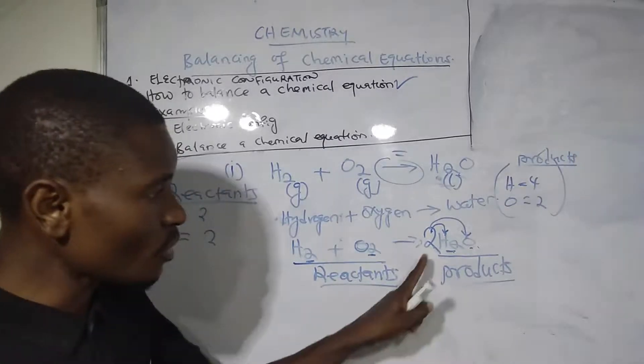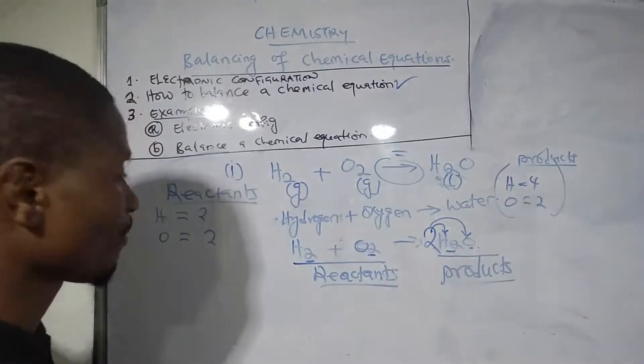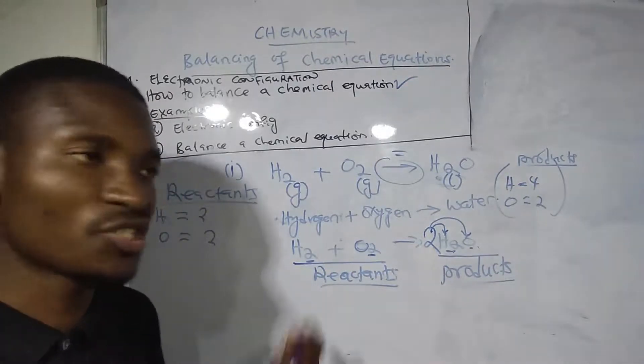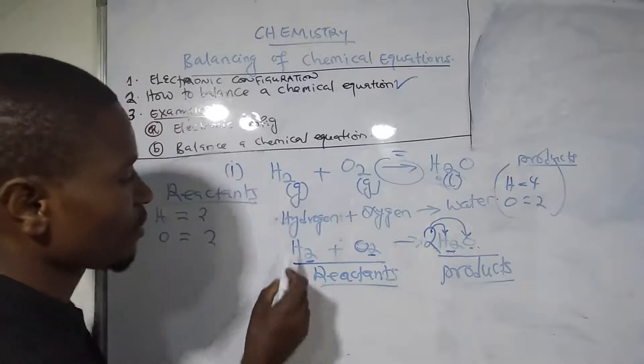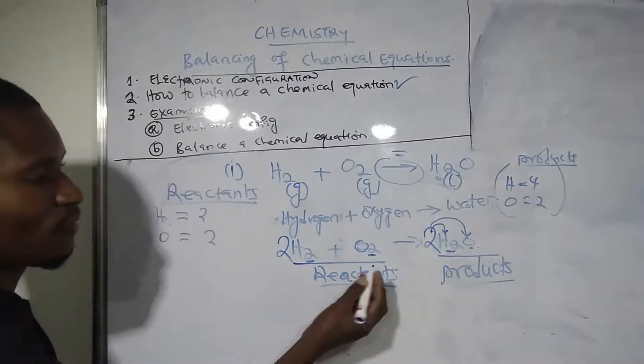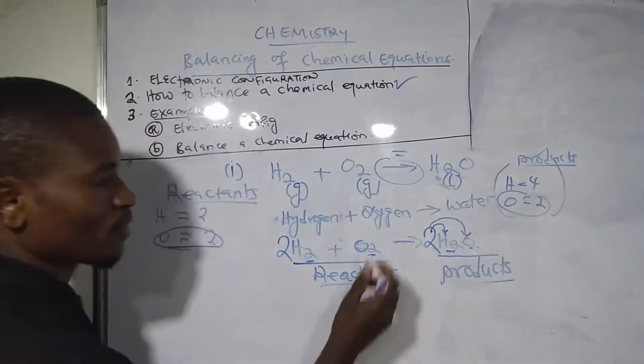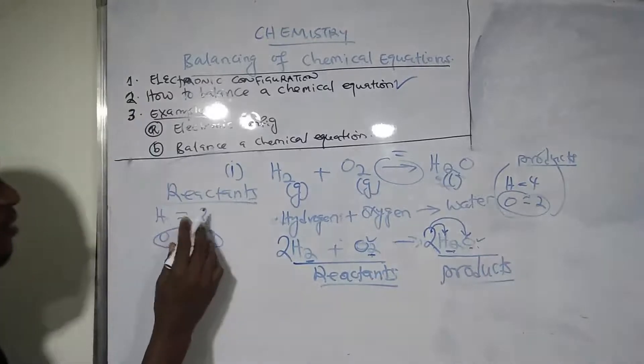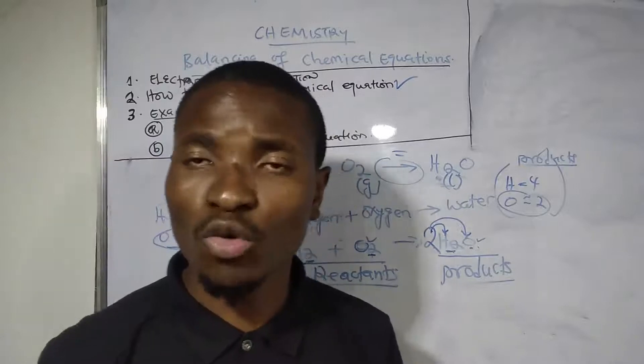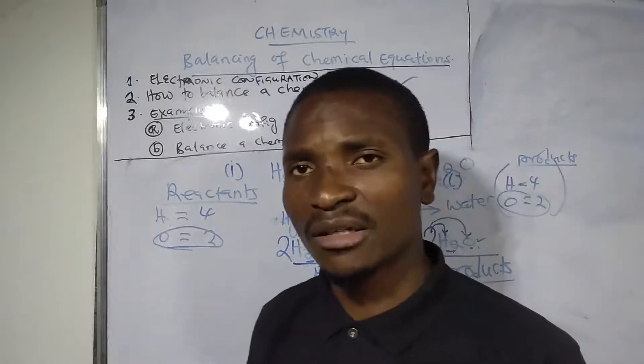On the reactants, hydrogen is 2 and oxygen is 2. But hydrogen on the products is 4. I need to change the reactant hydrogen from 2 to 4 by putting a 2 in front of hydrogen. For oxygen, it's 2 and 2, so oxygen is balanced. Hydrogen is now 4 on both sides. Finally, you've balanced the chemical equation for the reaction between hydrogen and oxygen.